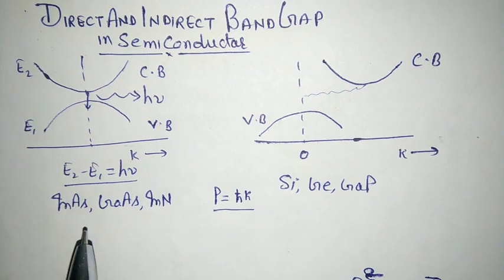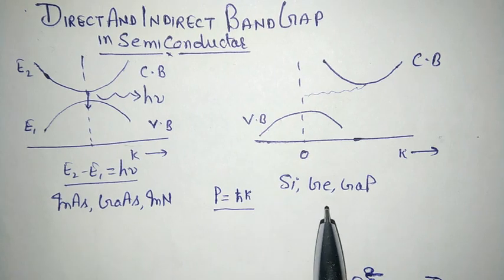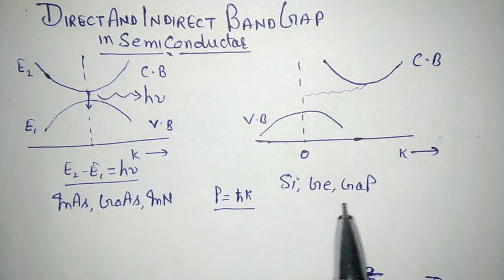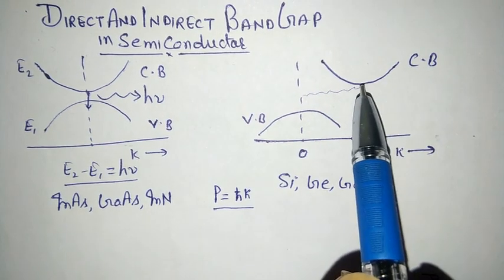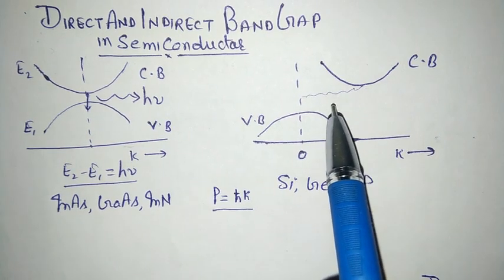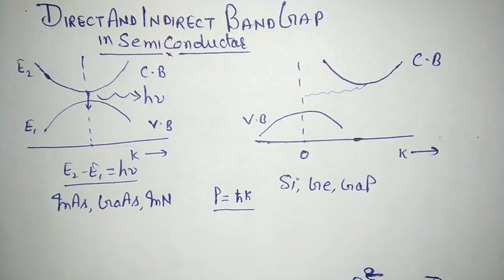The application of direct band gap semiconductors is the LED — the light emitting diode. Indirect band gap semiconductors, like silicon, are used in chips, but they are not used in LEDs because during the transition there is no radiation in the form of light. So indirect band gap semiconductors are never used in LEDs. Thank you.